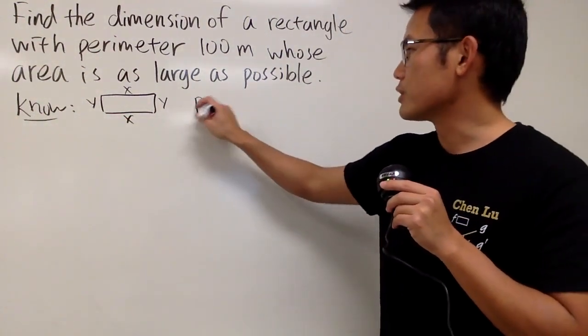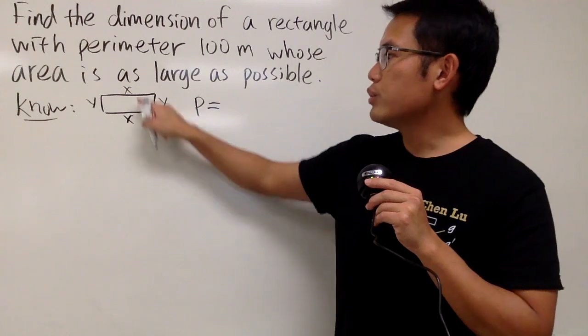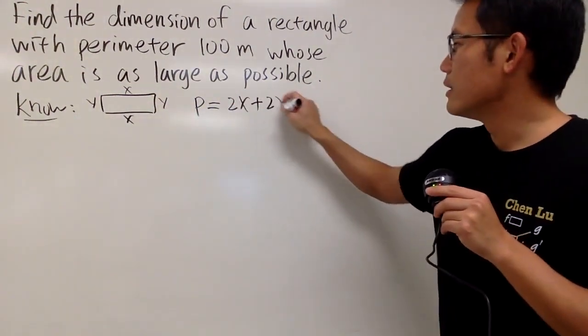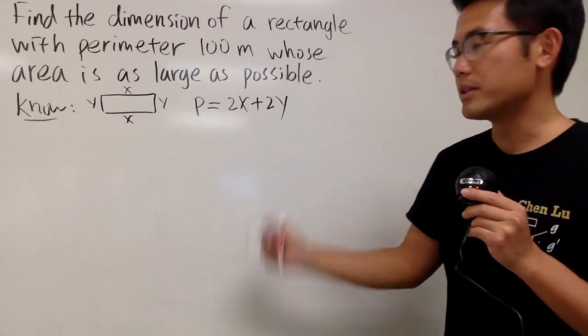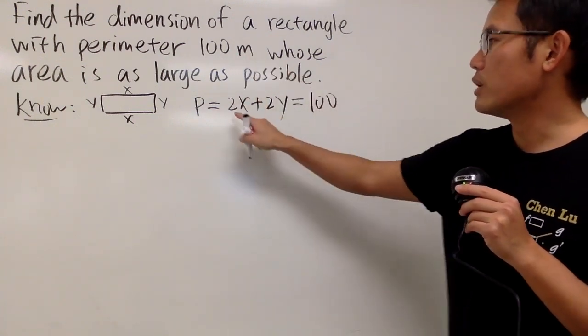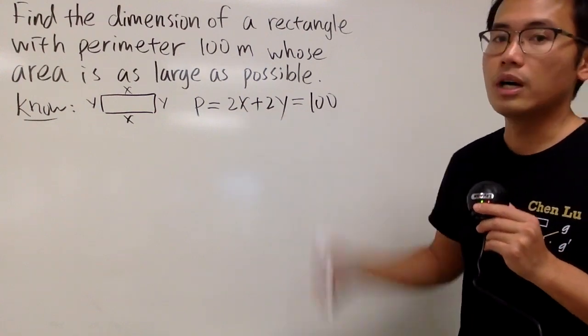First of all, we know the perimeter, which is just P, which is going to be 2 of the x plus 2 of the y. Right, that's the formula for the perimeter. And of course, we know the perimeter is 100. In other words, 2x plus 2y is equal to 100, like this.